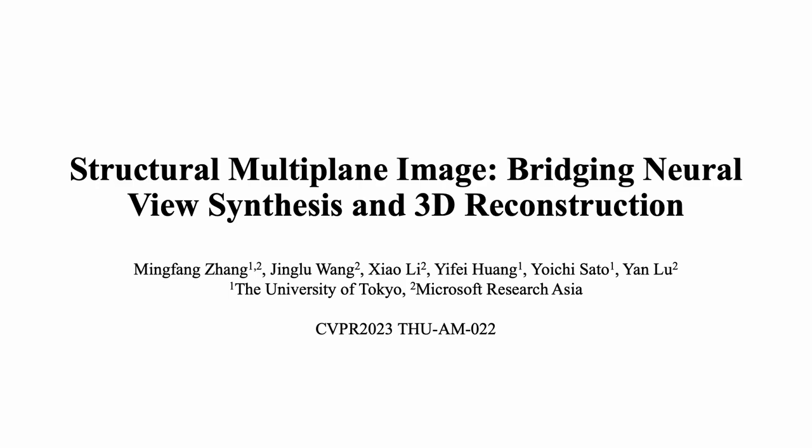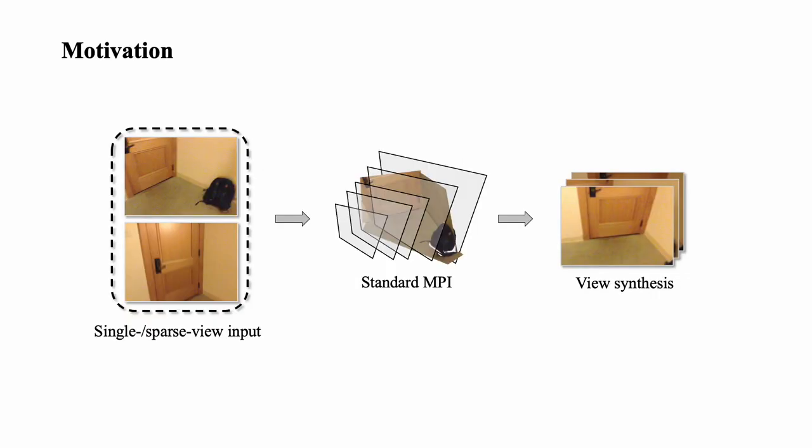Structural Multi-Plane Image: Bridging Neural View Synthesis and 3D Reconstruction. The standard multi-plane image contains a set of fronto-parallel RGB alpha layers for efficient novel view synthesis.